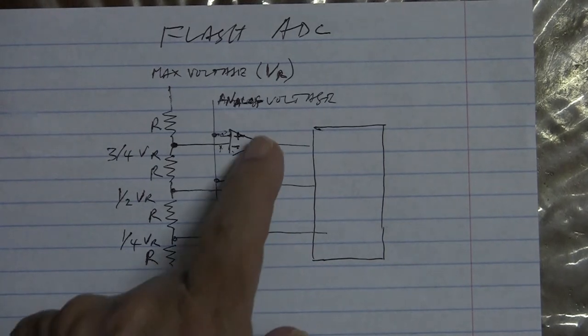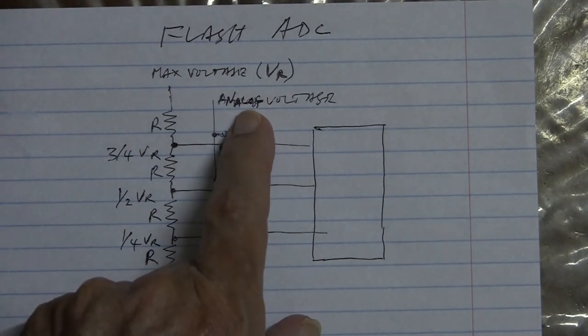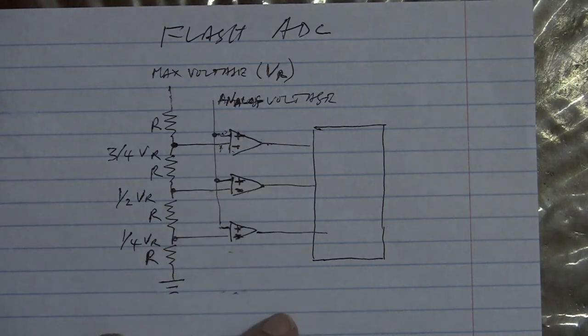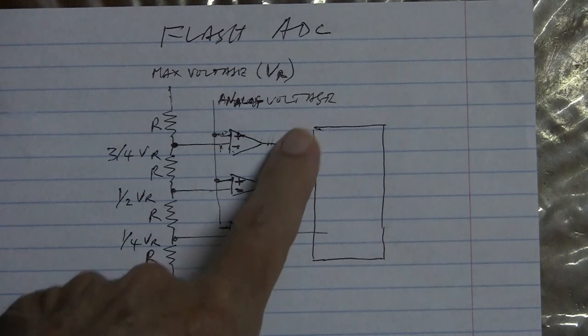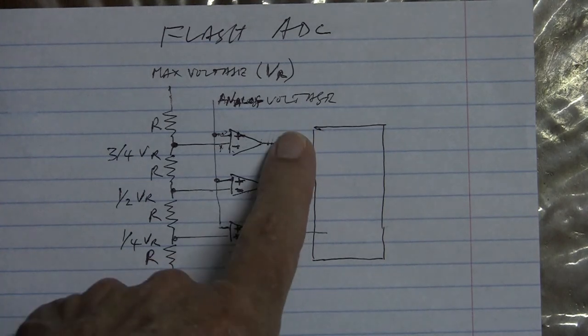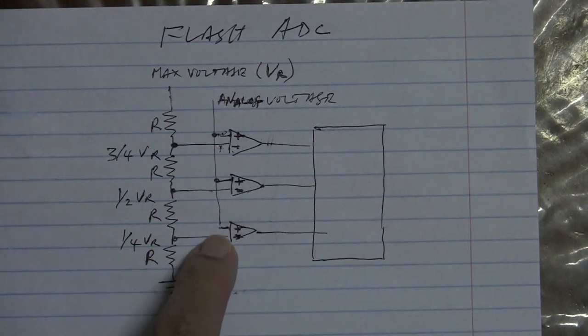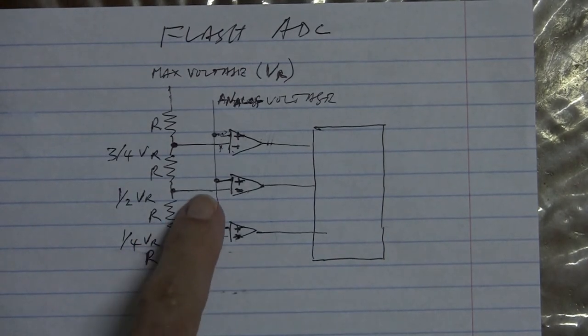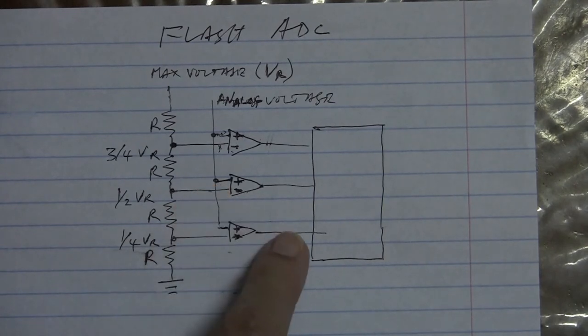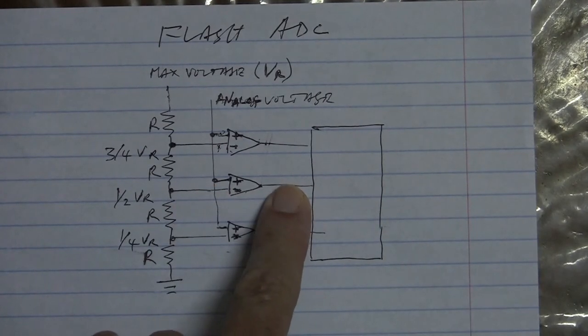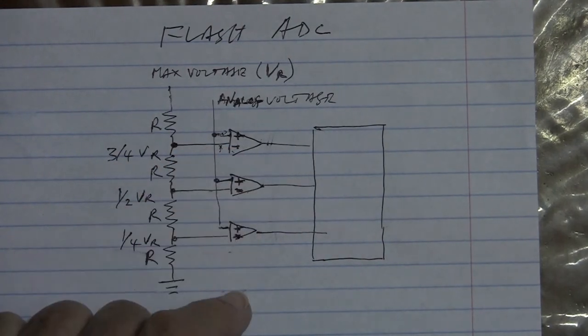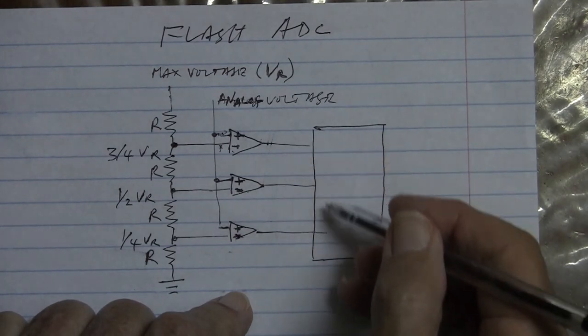So what will happen with our analog voltage here? If we put in an analog voltage that is less than a quarter, then all of them will be off. As it goes a bit more than a quarter, this will become a one. When it reaches half and goes a bit above half, the two of these will be one. And when it reaches three quarters and goes a bit above three quarters, then all three of these will be one.